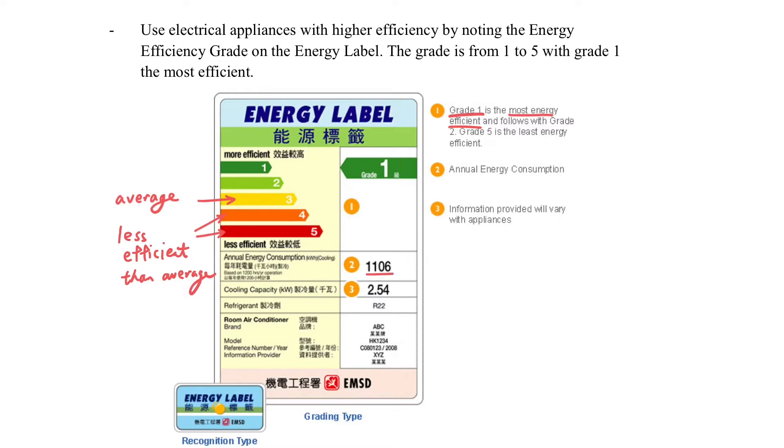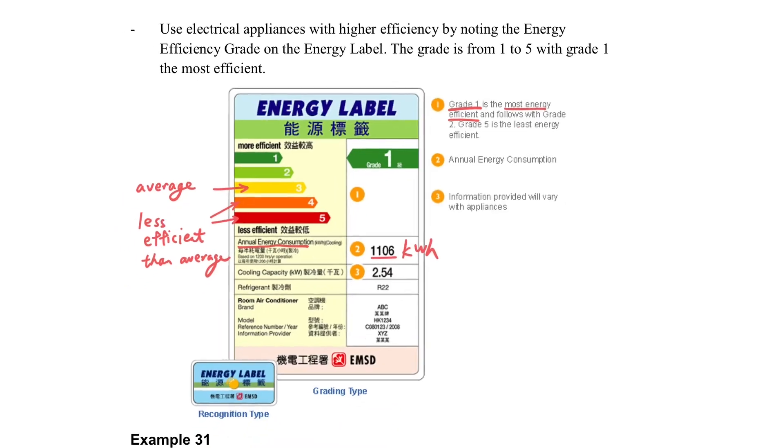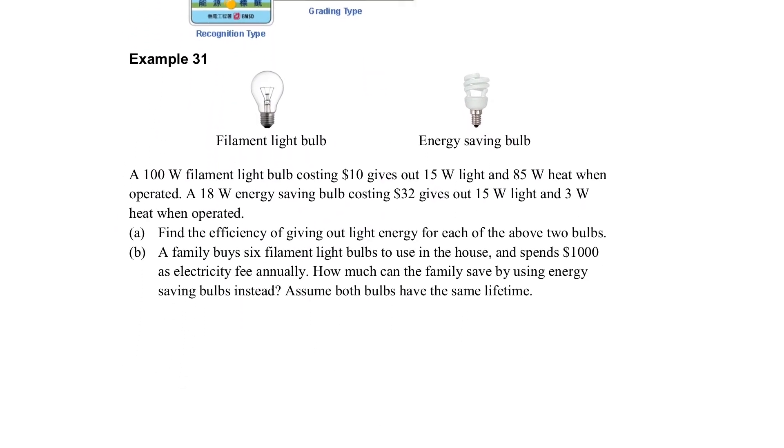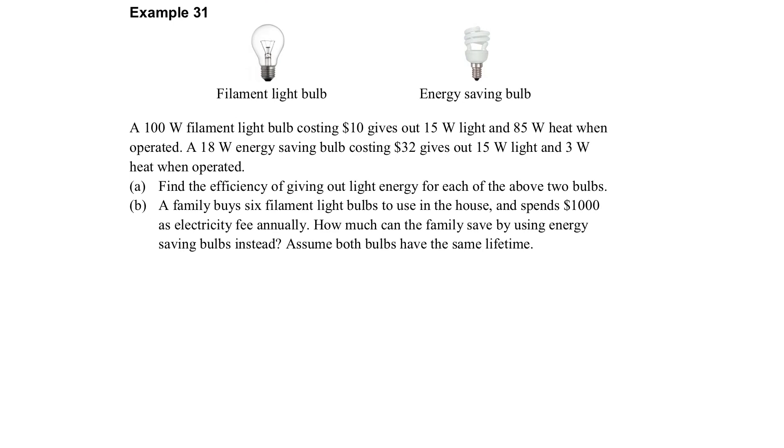So usually you won't able to see the level 4 and level 5 electric appliances in the market, because they will hide it from you. It also shows the annual energy consumption.